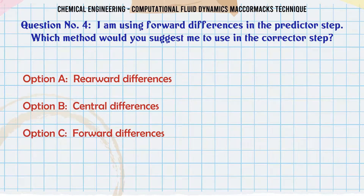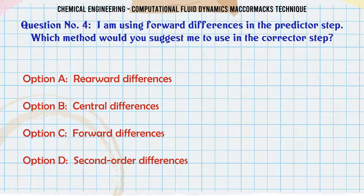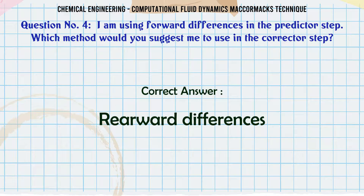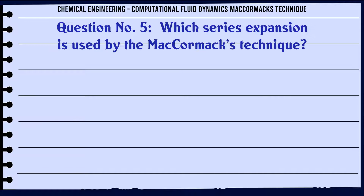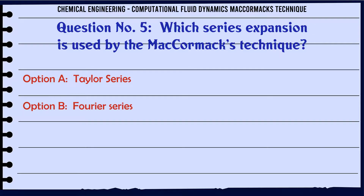I am using forward differences in the predictor step. Which method would you suggest to use in the corrector step? A. Rearward differences. B. Central differences. C. Forward differences. D. Second order differences. The correct answer is rearward differences.